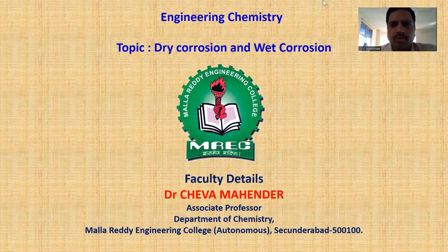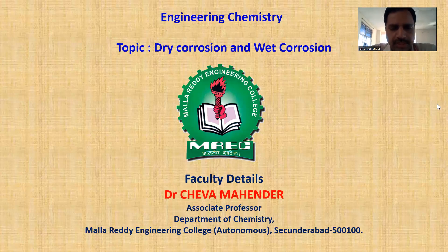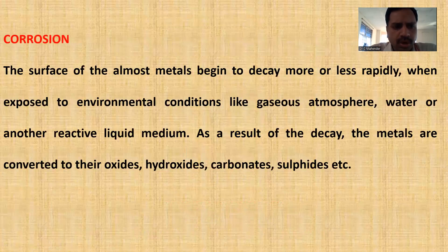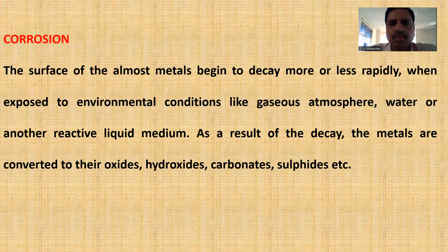Before going to see what is dry corrosion and wet corrosion, first we will see the corrosion definition. We know that corrosion generally takes place for only metals. The surface of almost all metals begins to decay more or less rapidly when exposed to environmental conditions like gaseous atmosphere, water, or another reactive liquid medium.